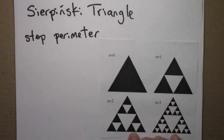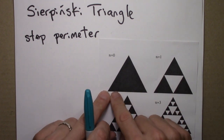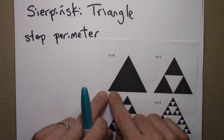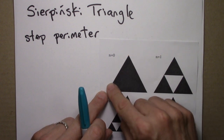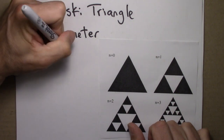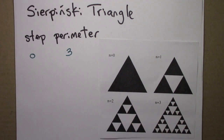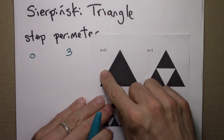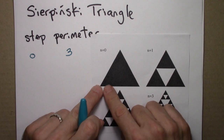So now let's think about the perimeter of the Sierpinski Triangle. Initially at step 0, let's say that each side is length 1, so the perimeter is 1 + 1 + 1. So at step 0, the perimeter is 3. We have 3 sides, each of length 1.